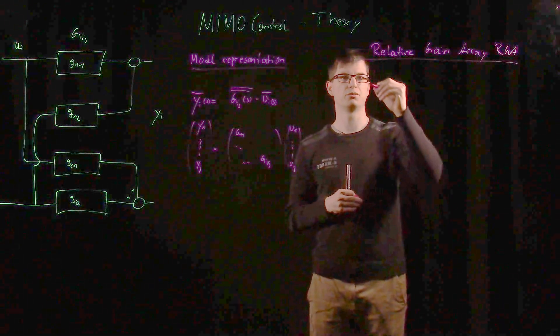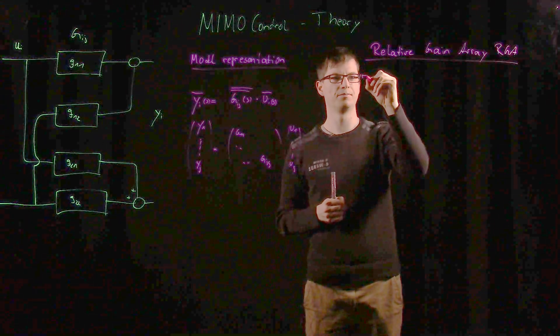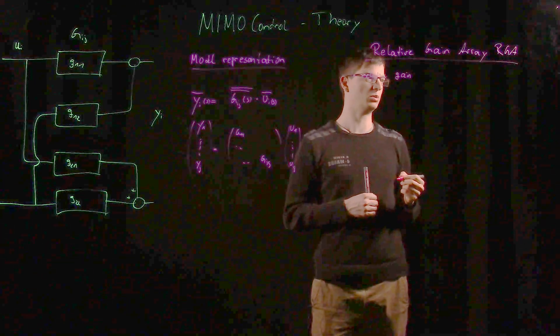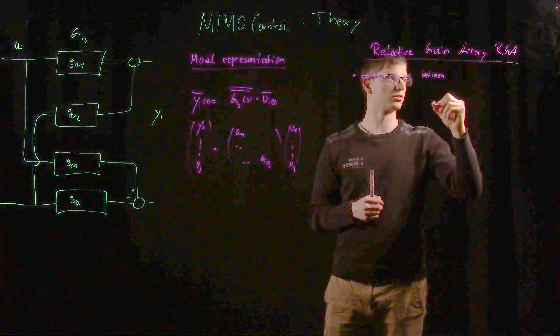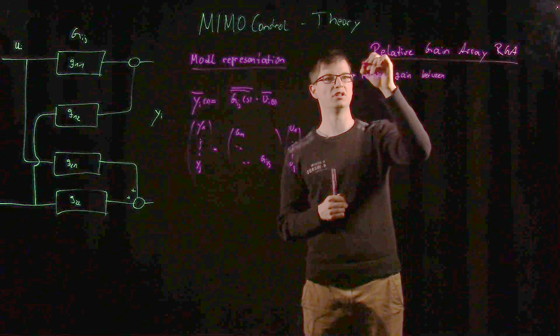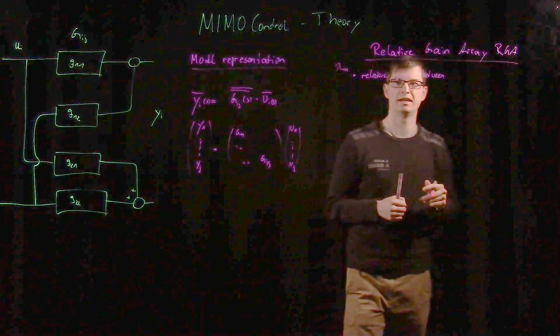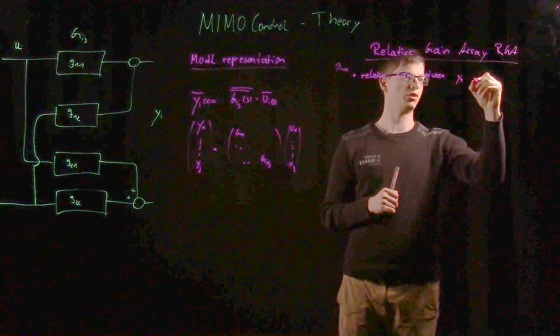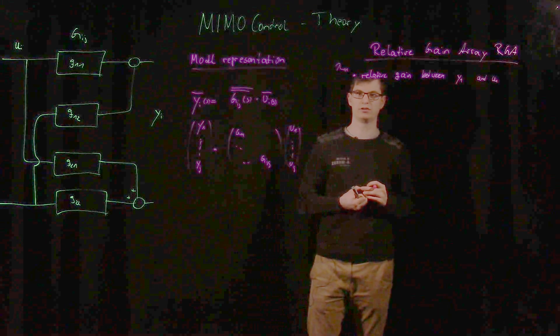In this video we want to describe, out of this box of matrices, the Relative Gain Array, and that will give us a measure of how big this interaction actually is. First we want to describe what it is. The Relative Gain Array is the relative gain between the output and the input. When we assume we want to call it lambda, for example lambda_1,1, this is the relative gain between the output y1 and the input u1.